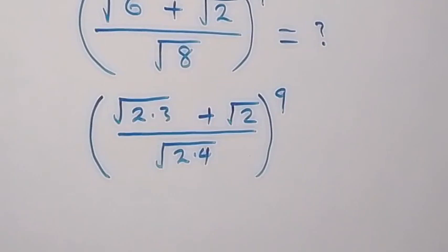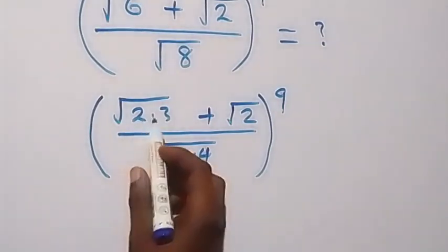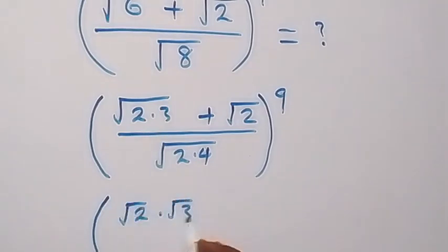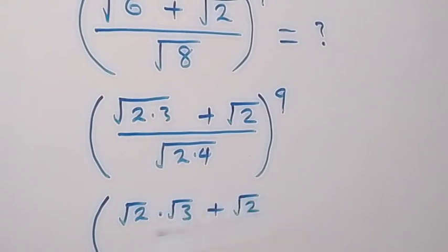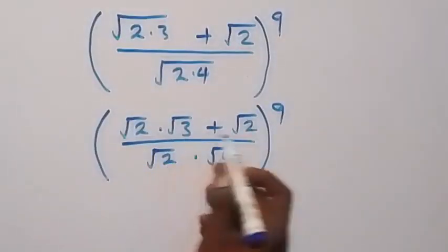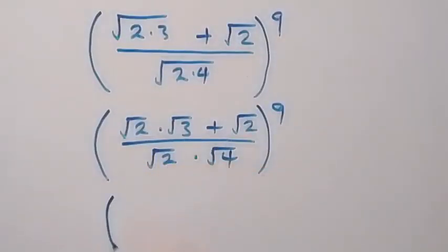Before we continue, please subscribe to this channel and turn the notification bell on. Thank you. Then here we can separate this as root 2 times root 3, then plus root 2, then over here we can write this as root 2 times root 4.